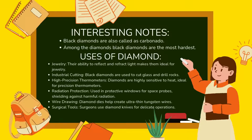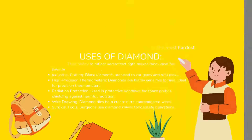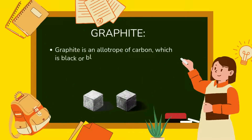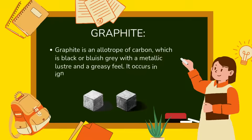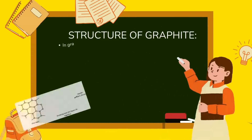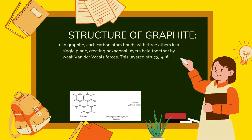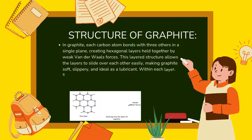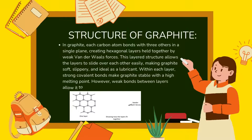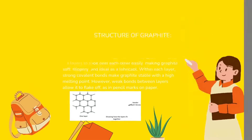Graphite is an allotrope of carbon which is black or bluish-gray with a metallic luster and a greasy feel. It occurs in igneous and metamorphic rocks such as marble. Structure of graphite: each carbon atom bonds with three others in a single plane, creating hexagonal layers held together by weak van der Waals forces. This layered structure allows layers to slide over each other easily, making graphite soft, slippery, and ideal as a lubricant. Within each layer, strong covalent bonds make graphite stable with a high melting point, while weak bonds between layers allow it to flake off — as seen in pencil marks on paper.